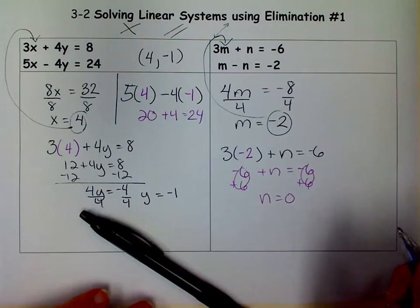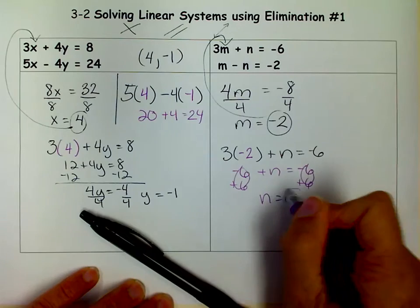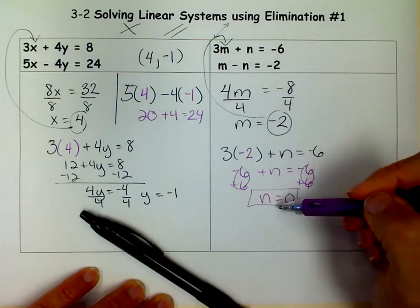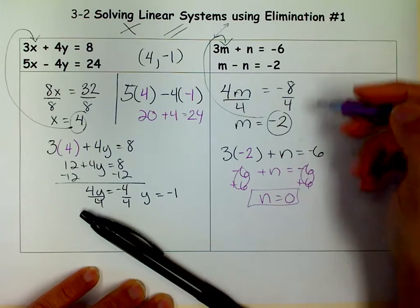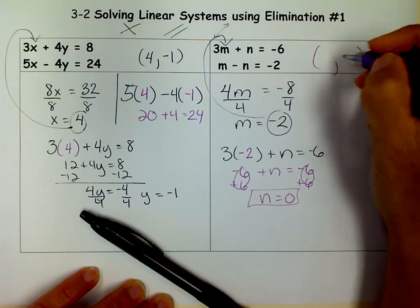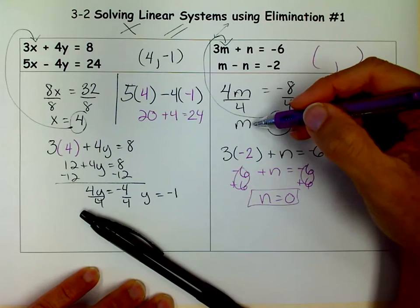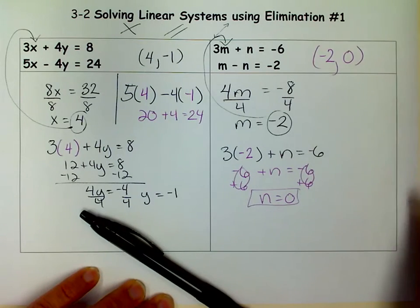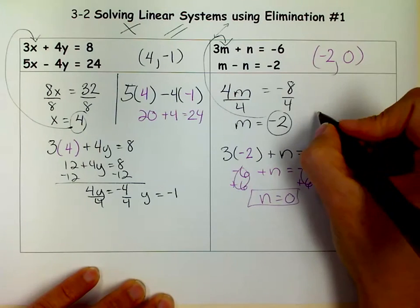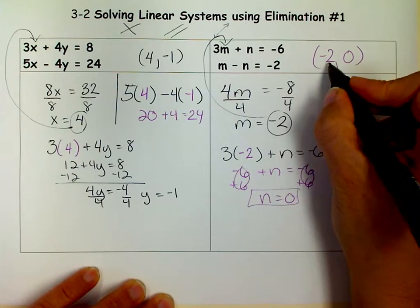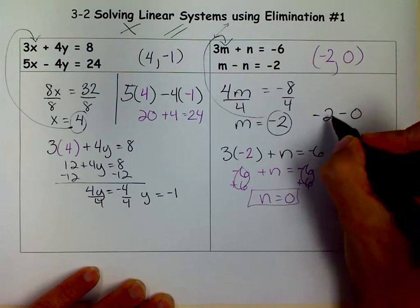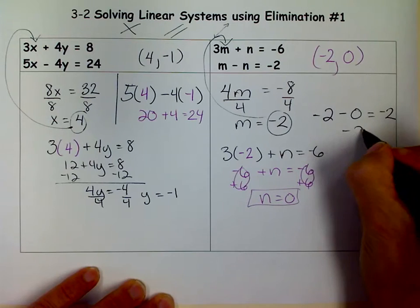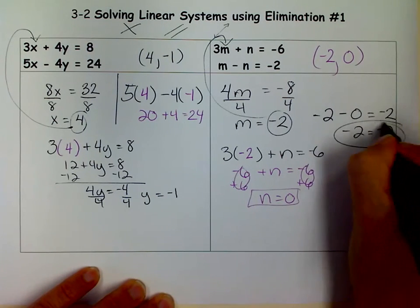And 0, remember, is a number. You can indeed get an answer of 0. So sometimes when you have m's and n's instead of x's and y's, people don't put them in the point in the coordinate system. But I like to, and I just choose whichever one is alphabetically first, like m comes before n in the alphabet. I choose that to go first. And now it's time to check. So I check in my second equation. I'm going to say m, which is negative 2, minus 0, which is n, does that equal negative 2? And yes, negative 2 minus 0 is negative 2. So that is my check. And now I know I'm right.